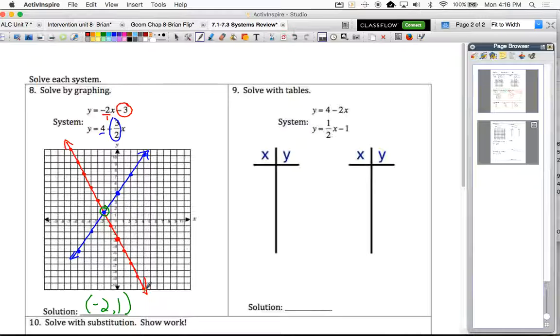If you go in the y equals on your calculator and type in 4 minus 2x and then do the same thing with the second equation, we'll get positive 1 half x minus 1.